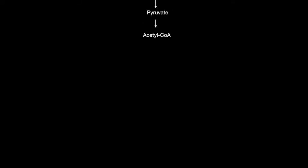Pyruvate then becomes acetyl-CoA and combines with the end product of the TCA cycle, oxaloacetate, to create citrate, which cycles around.